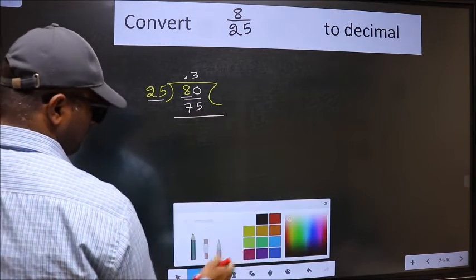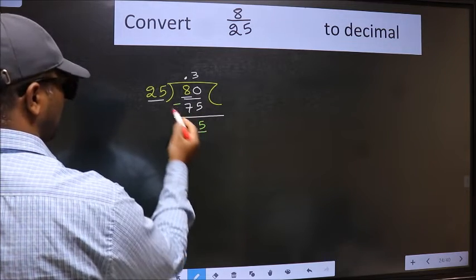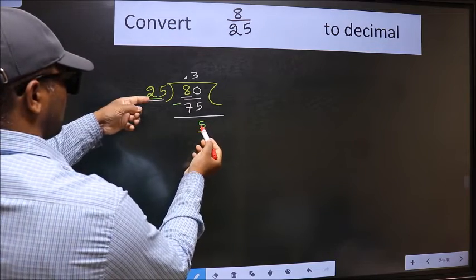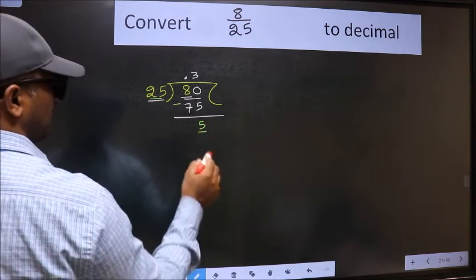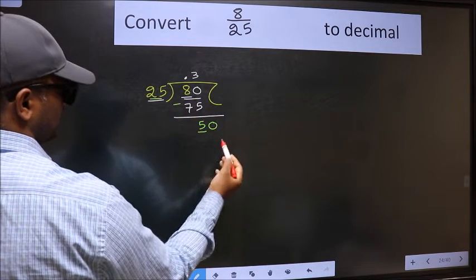Now we should subtract. We get 5. Here we have 5 and here 25. 5 is smaller than 25, and we already have the decimal, so this time we can directly take 0.